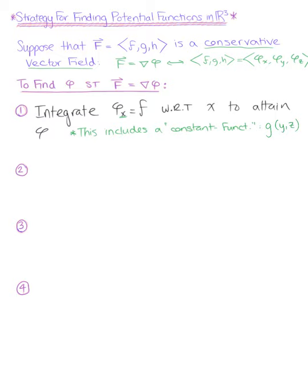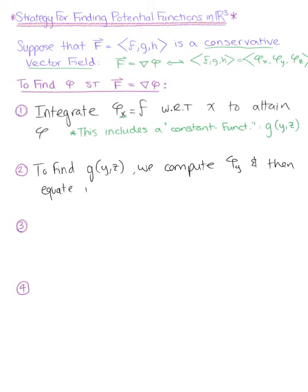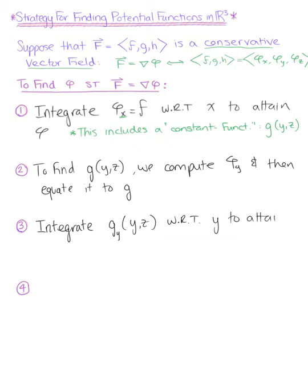Now we need to find this arbitrary constant function g(y, z). To do so, we compute the partial derivative of phi with respect to y and then equate it to the g component of the vector field — just like we did in R2. We then integrate the partial derivative of g(y, z) with respect to y to attain g(y, z).